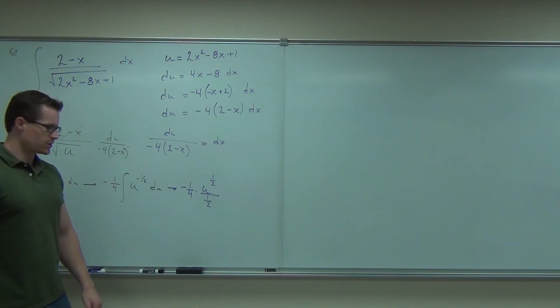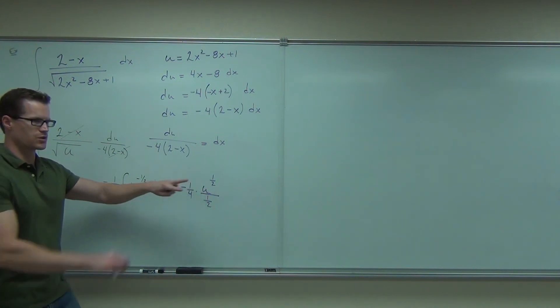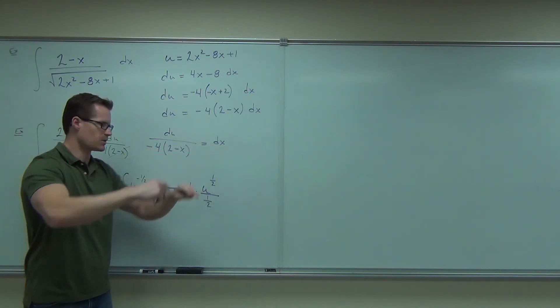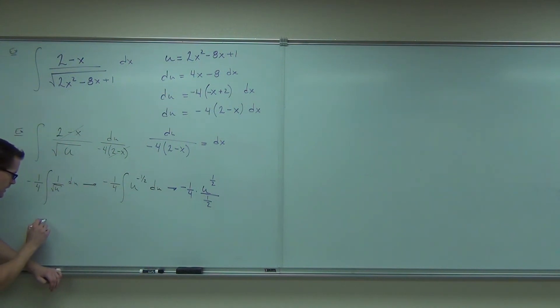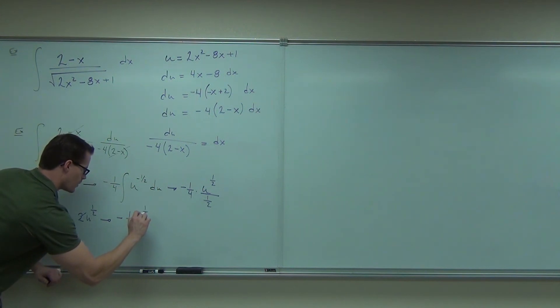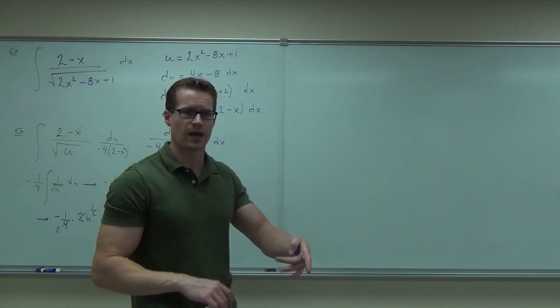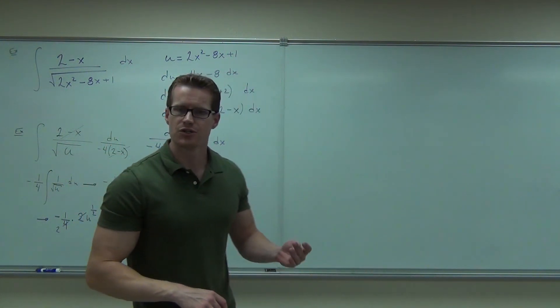This one fourth and that one half, notice that really this two is going to go up to that numerator, because you'd separate, reciprocate, and multiply. I'll show you both steps here. You'd get negative one fourth times two u to the one half, like that. Well, this is going to simplify. Negative one half, u to the one half. Or you could have it u to the one half over two. Negative u to the one half over two, that's fine.